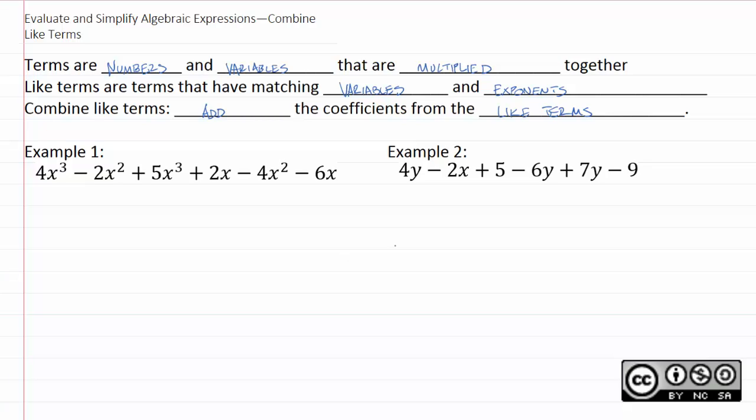So for instance with example one let's look for some matching sets of like terms. We see that we have two cubic terms here. We also have two squared terms here. And we also have just two regular x terms there. So we can combine those.